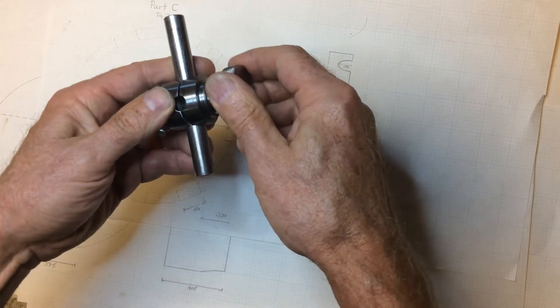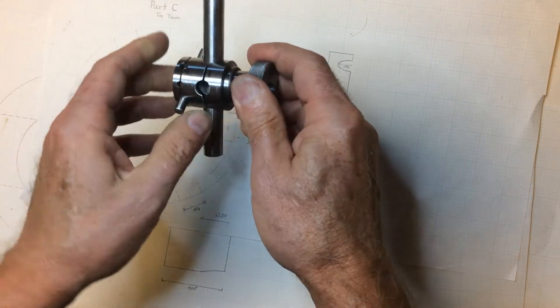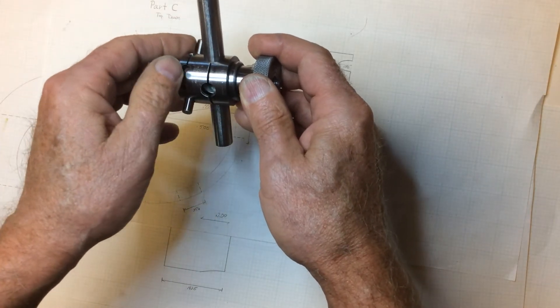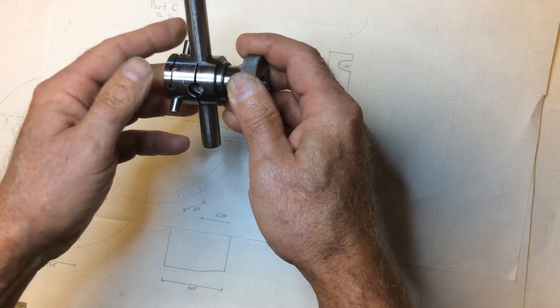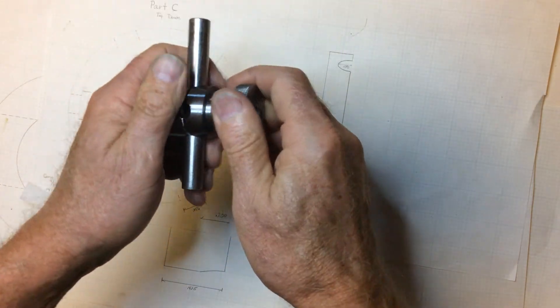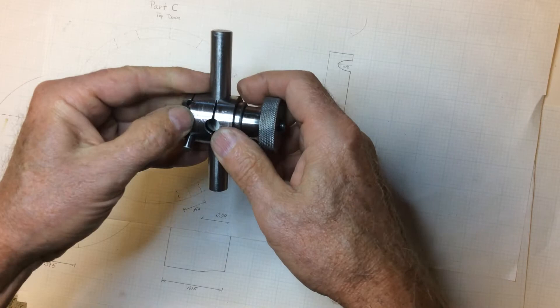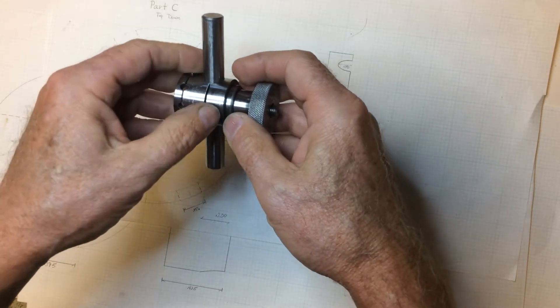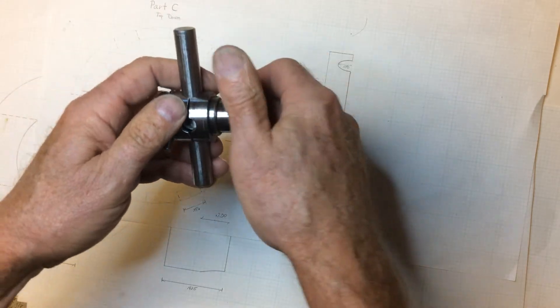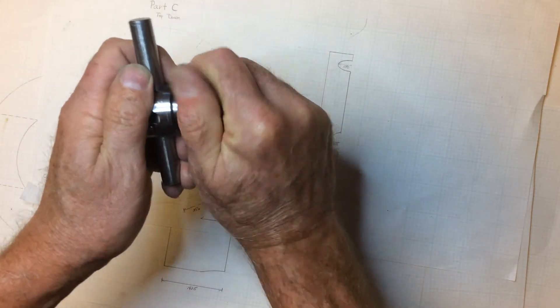This top knurled nut pulls everything together. It's like a stack of checkers, these various pieces, and as you snug down on this nut, it compresses all of those rings in such a way that the rods included are fixed.